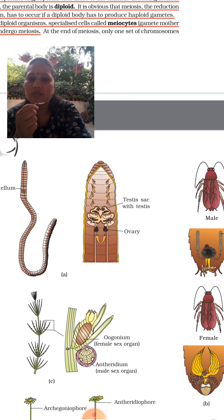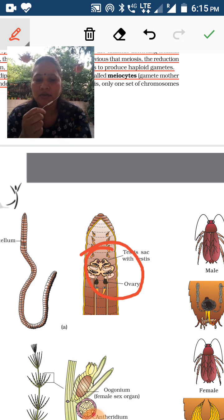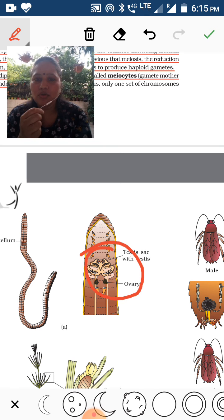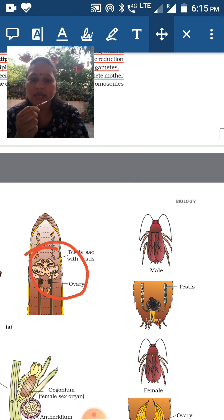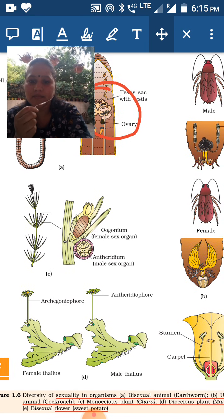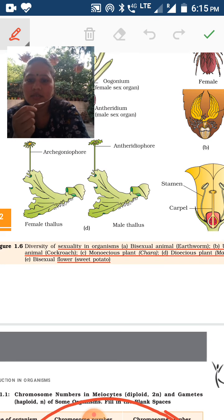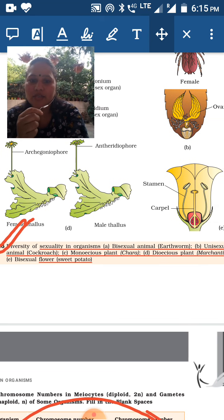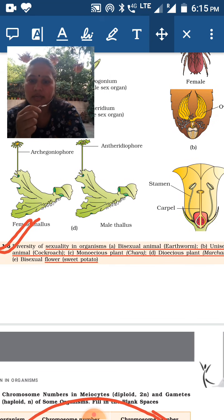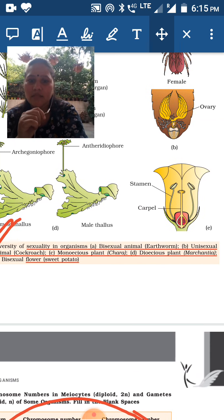In cockroach, both ovaries and testes are present in a single individual organism, so this is a hermaphrodite. You need to learn from Figure 1.6 — male and female parts are separate in some organisms while present together in others.